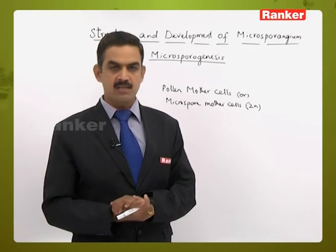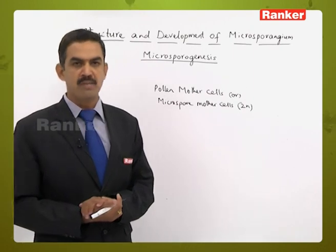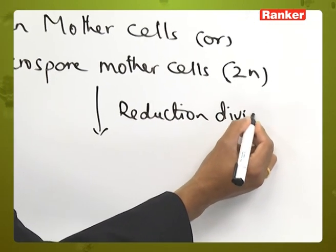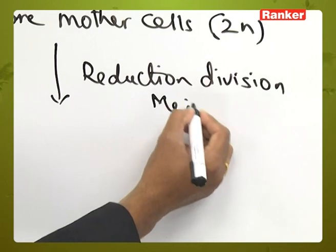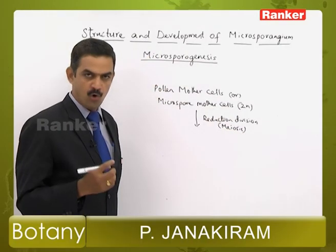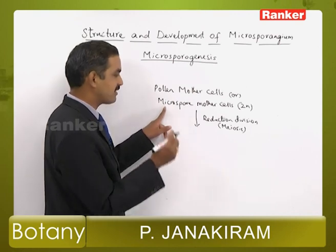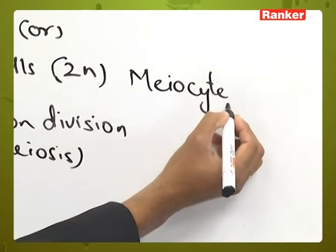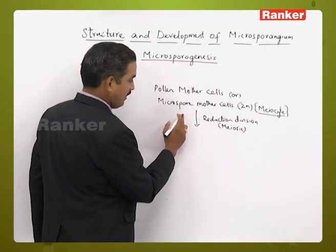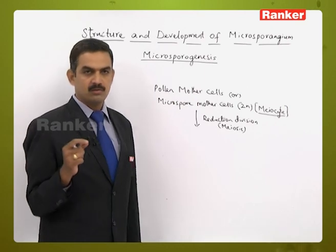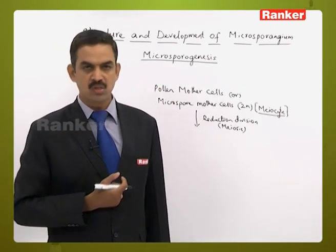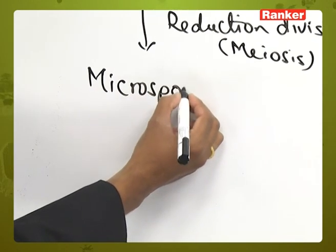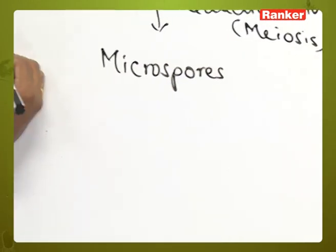The microspore mother cells present inside the pollen sac undergo meiosis, which is a reduction division. When a cell undergoes reduction division, four daughter cells are formed. The microspore mother cell, as it undergoes meiosis, is considered a meocyte. In meiosis, the cell divides twice, resulting in four haploid cells called microspores, or a tetrad of microspores.